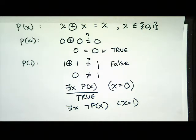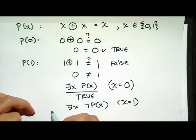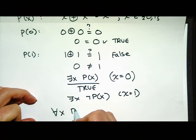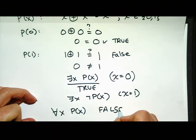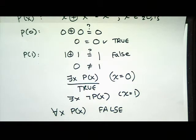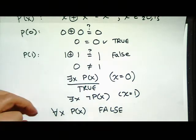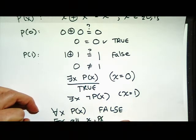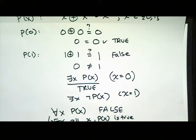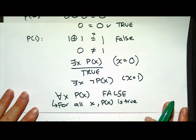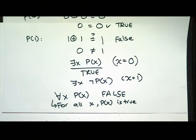Is this P of X always true no matter what X is? No, clearly not — we just found one that's false. So we have another quantifier called 'for all,' written like an upside-down A. This statement says: for all X, P of X is true. And this statement is actually false in this case — for all X, P of X where X XOR X equals X is false, because we found a counterexample.